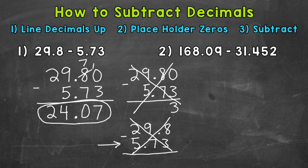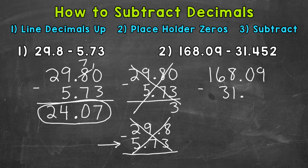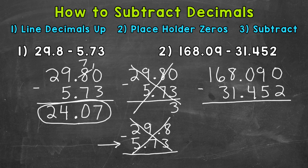Let's move on to number 2 and try another example. So we have 168 and 9 hundredths minus 31 and 452 thousandths. Let's use a placeholder 0 so everything goes over to the thousandths place. Now we're ready to subtract. Don't drop that 2 because we have 0 minus 2 there and we need to borrow. Let's borrow from the 9. And now we have 10 minus 2, which is 8 — so an 8 in the thousandths.